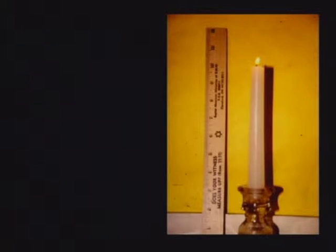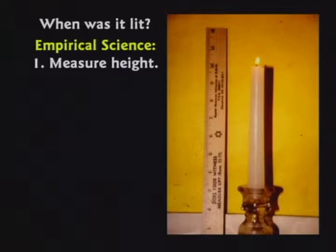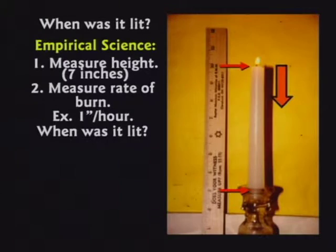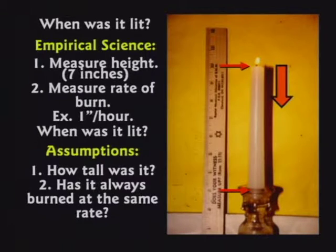Carbon dating doesn't work. If you walked into a room and found a candle burning on a table and I asked when it was lit, you couldn't tell me. We could measure the candle at seven inches tall and find it burns one inch per hour — two hard empirical facts. But you still can't tell when it was lit unless you make assumptions: how tall was it originally, and has it always burned at the same rate? Neither assumption can be proven. If you find a fossil in the dirt, all you know is it died. You don't even know where it died — just where it ended up buried.